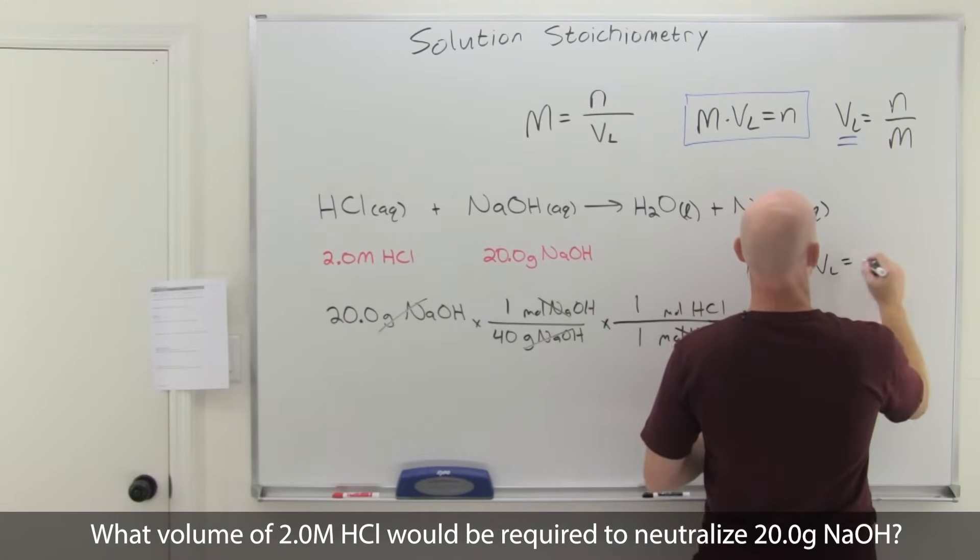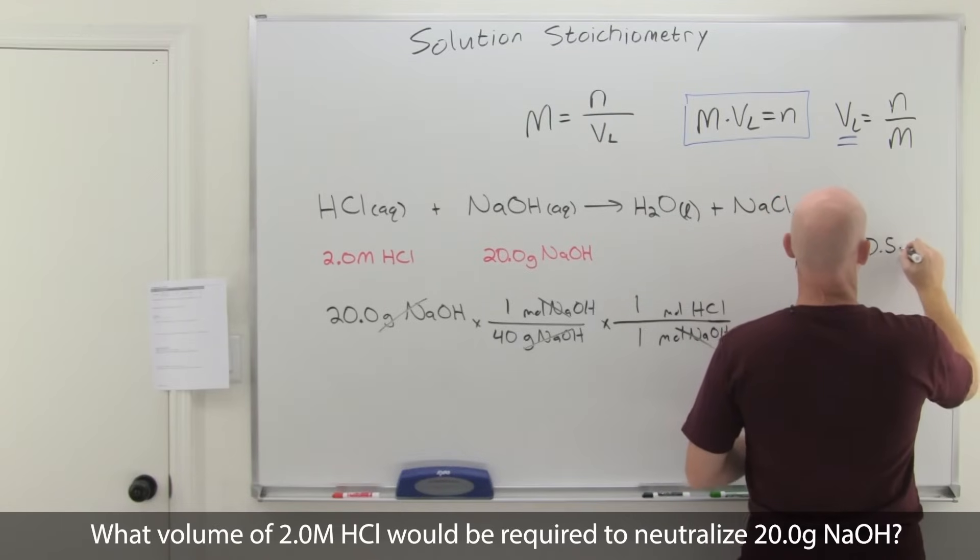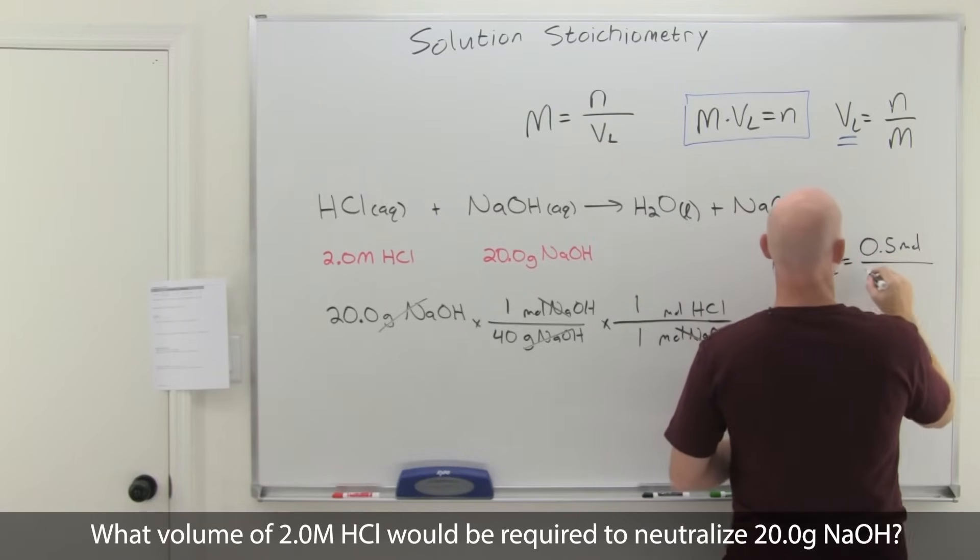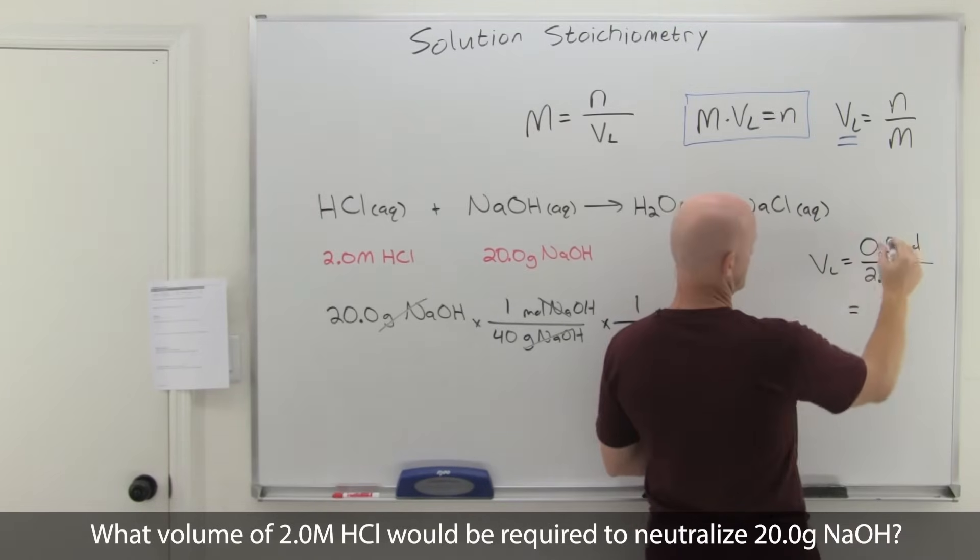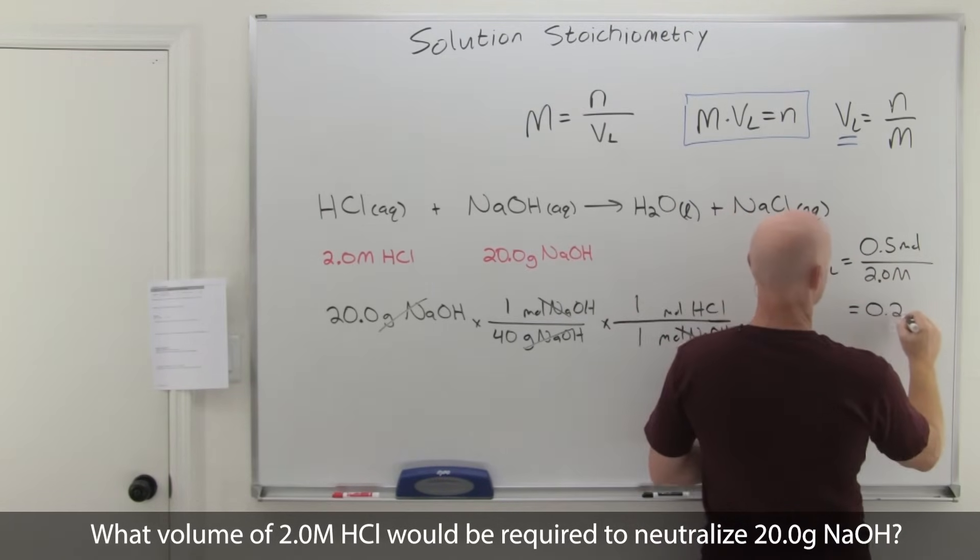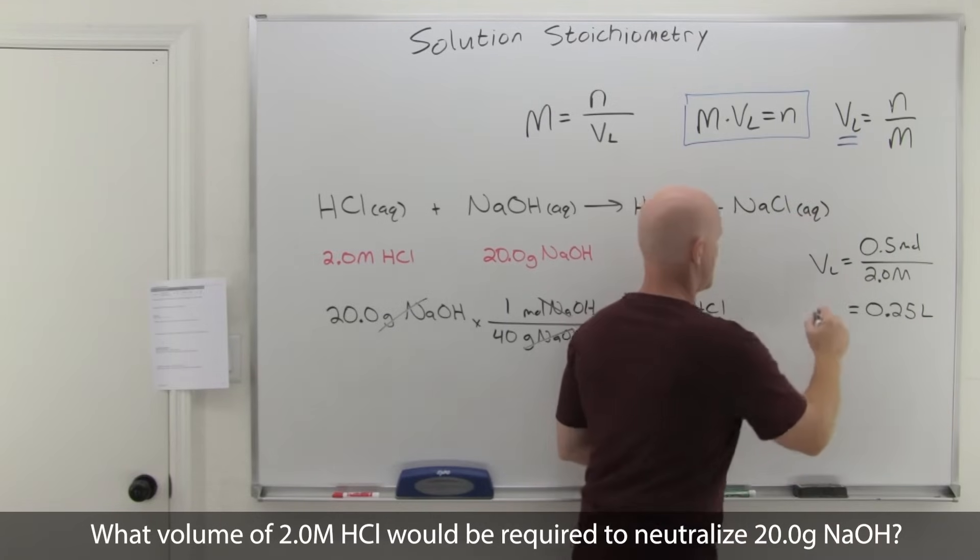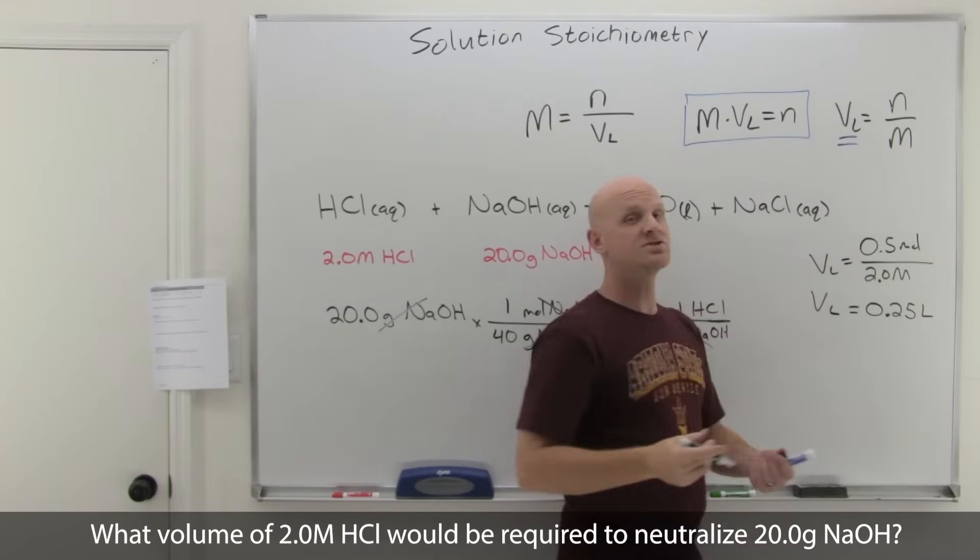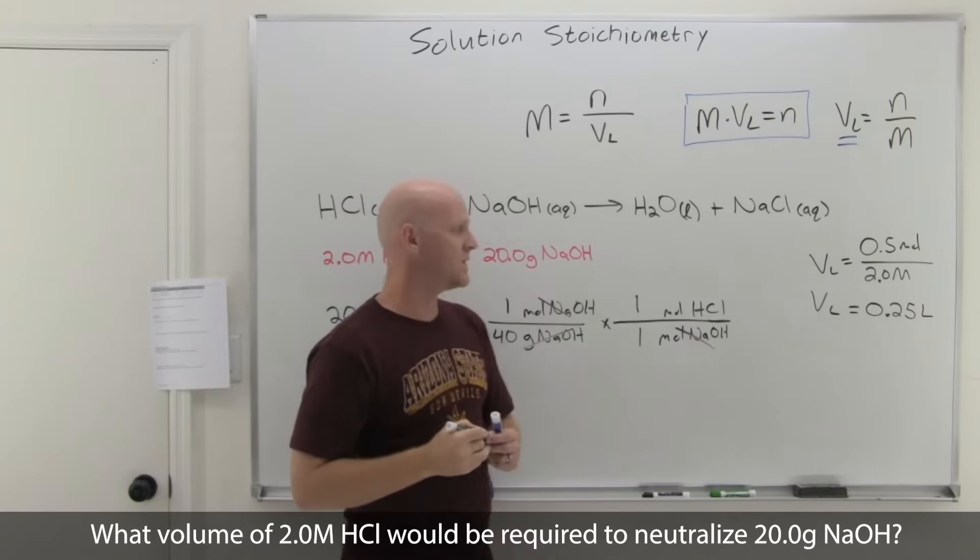In solving for this volume, it's moles, 0.5 moles of HCl all over the 2.0 molar, which is going to get us 0.5 divided by 2 is 0.25 liters. If they wanted that in milliliters, we could convert that to 250 milliliters by multiplying by 1,000.